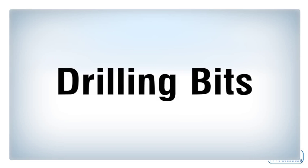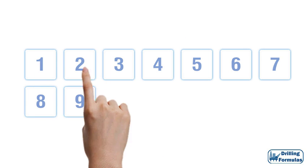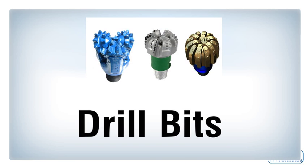Drilling Bits. This topic will describe the overview of drilling bits. Currently in the drilling industry, there are two main categories of drilling bits: rolling cutter bits and fixed cutter bits. Bit sizes vary from 3½ to 36 inches.